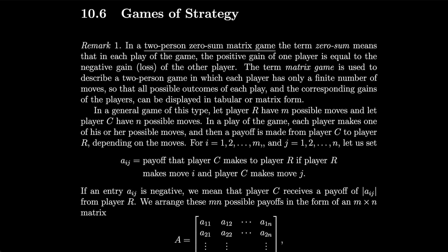In a general game of this type, let player R have m possible moves and let player C have n possible moves. In a play of the game, each player makes one of his or her possible moves, and then a payoff is made from player C to player R depending on the moves. For i equals 1 through m and j equals 1 through n, let aij equal the payoff that player C makes to player R if player R makes move i and player C makes move j.